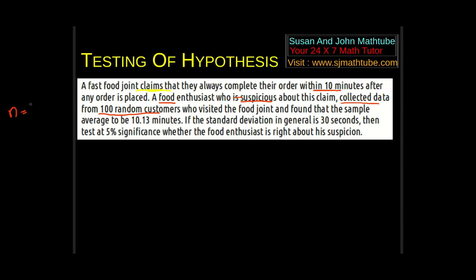The sample size of this experiment is large. Do you remember large and small? The number greater than 30. And yeah average. So he checked the sample average and that is 10.13 minutes. If the standard deviation in general is 30 seconds, then we should write everything in the same unit. So I will write standard deviation is equal to, and they are talking in general, so it is a population standard deviation. 30 seconds means half a minute, that will be 0.5 minutes.